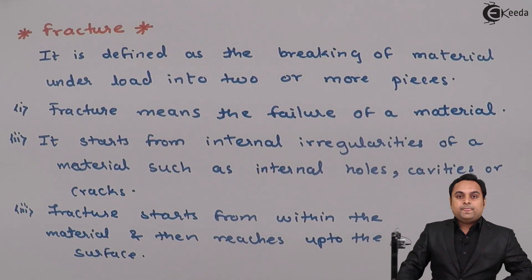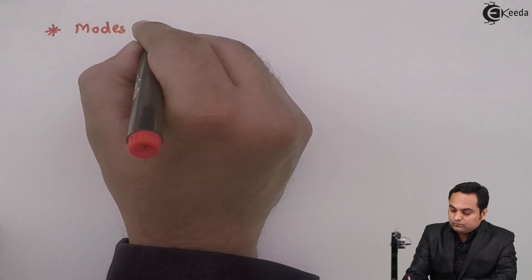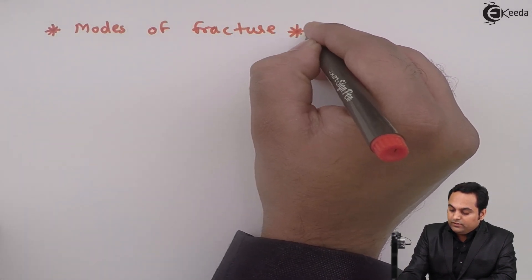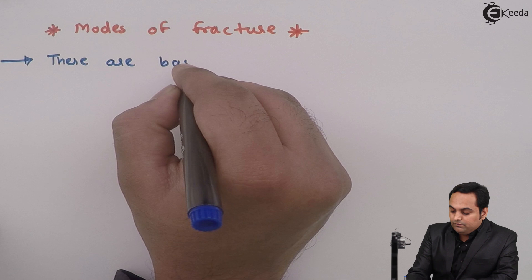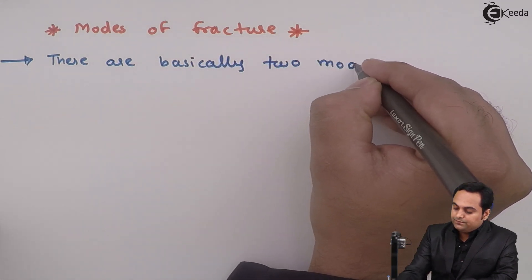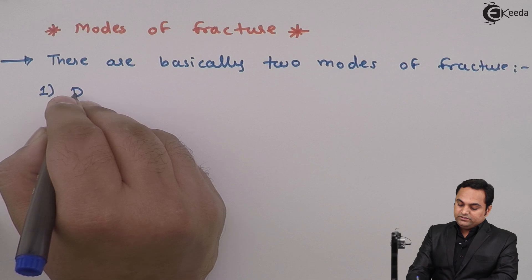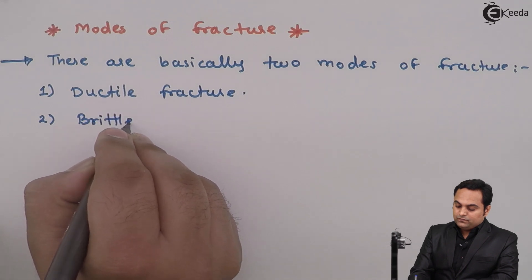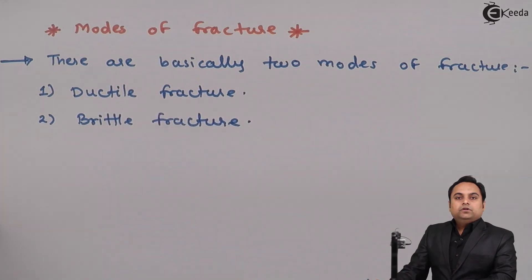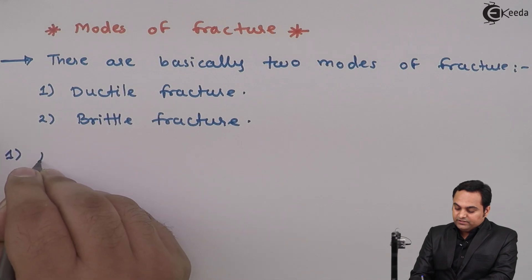Now once we have understood the definition, we can start with the modes of fracture. There are basically two modes of fracture: the first is ductile fracture and the second is brittle fracture. Let us now understand ductile fracture in detail.